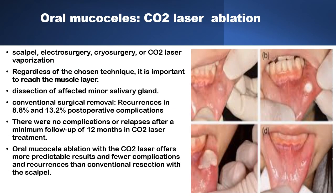The other common surgical choice is carbon dioxide laser ablation for the mucocele. Whether using cold steel, electrosurgery, cryosurgery, or laser, the important thing regardless of technique is to reach the muscle layer underneath the mucocele to ensure dissection of the affected minor salivary gland. This can be achieved in various ways including cold steel or laser, and healing following both procedures is quite satisfactory.